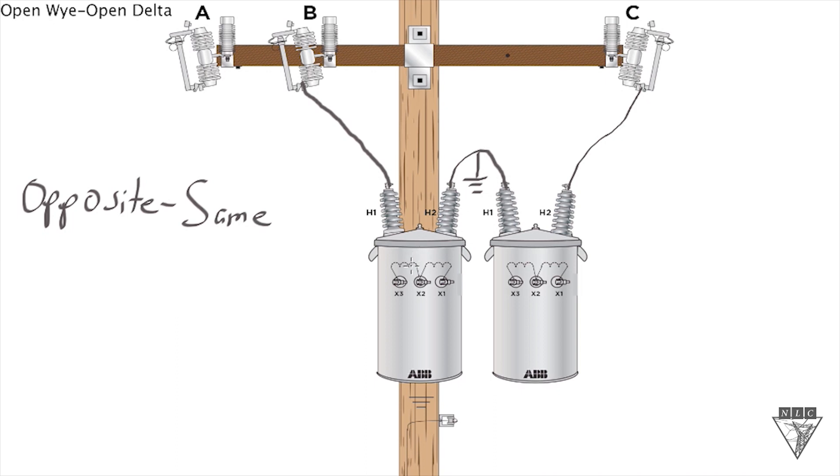Let's go ahead and move on down to the secondary connection, which is going to be a delta connection. So we're going to utilize this X2 bushing right here, and we're going to take this down to ground. This will be our neutral connection.